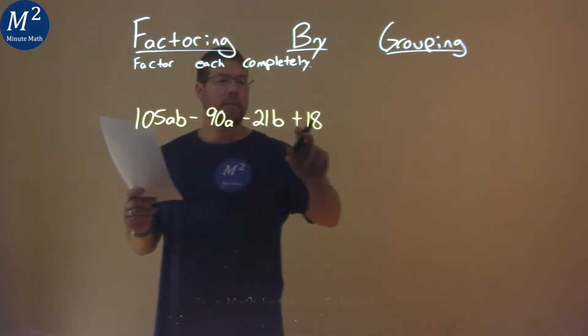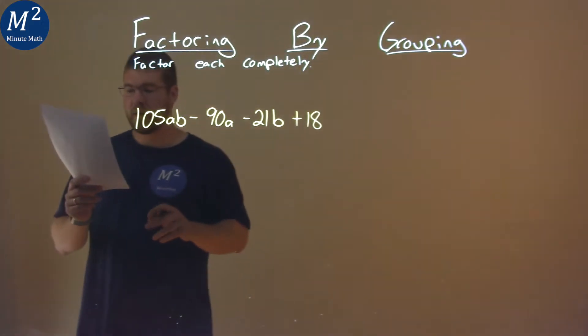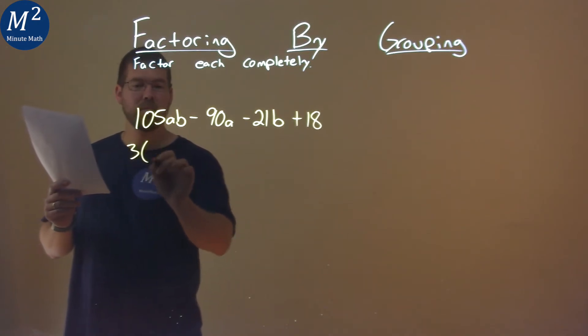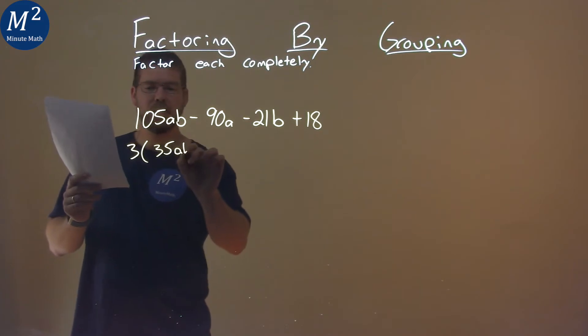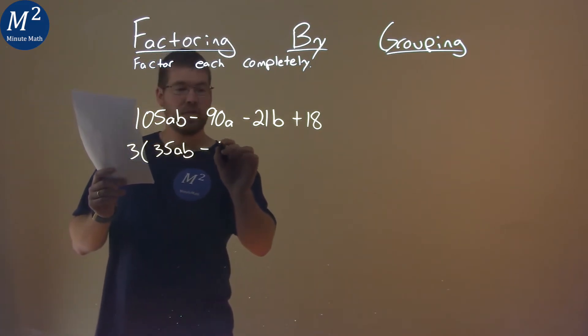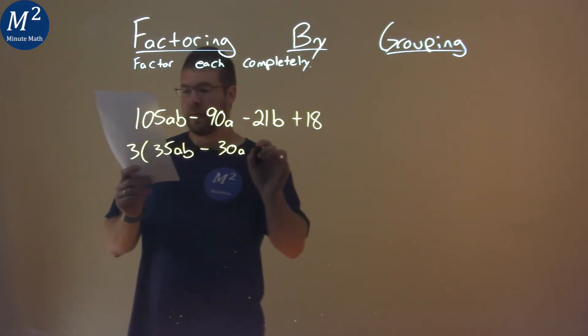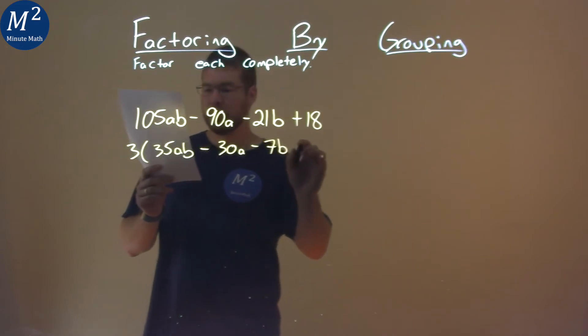Well, a 3 is in all parts right here, so I can pull out a 3 and I'm left with, from all parts, 35ab minus 30a minus 7b plus 6.